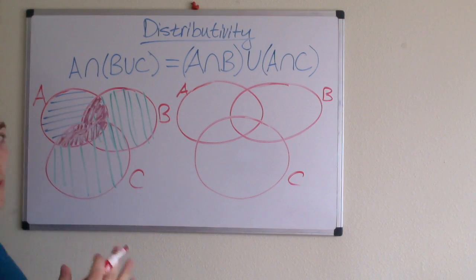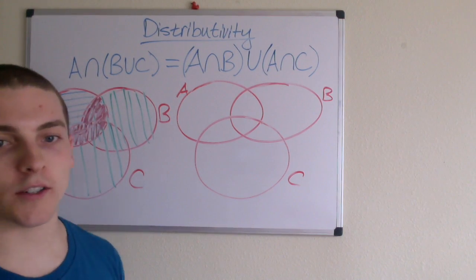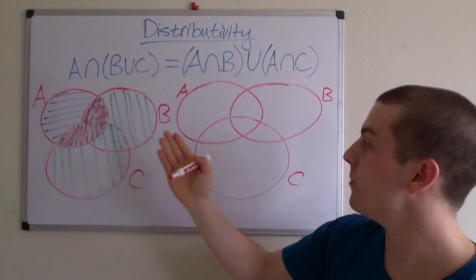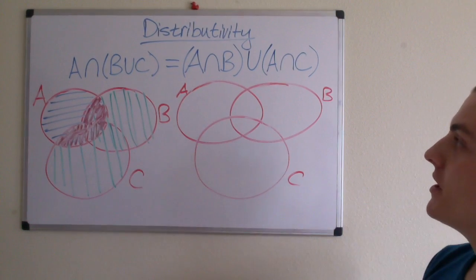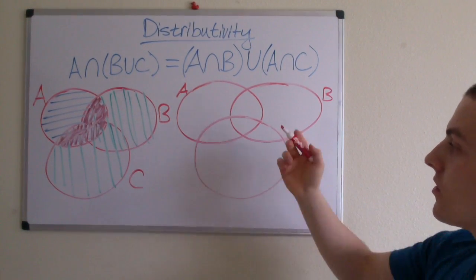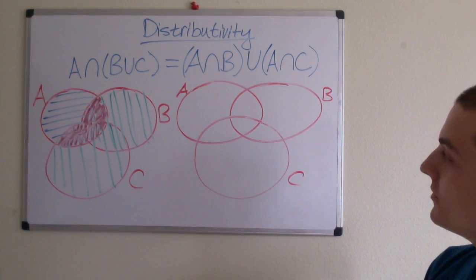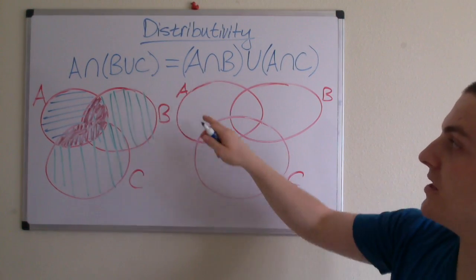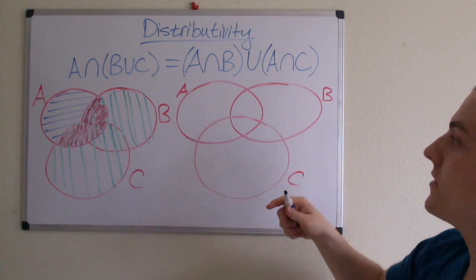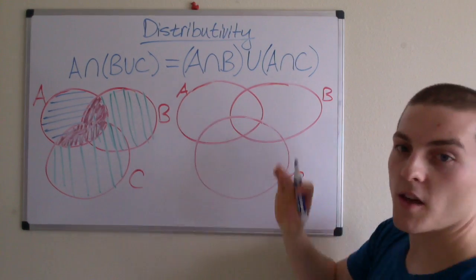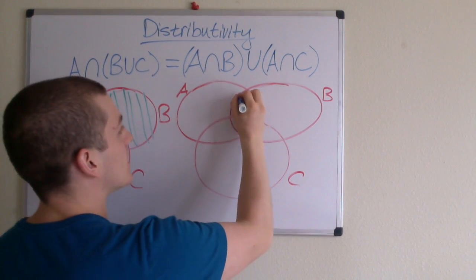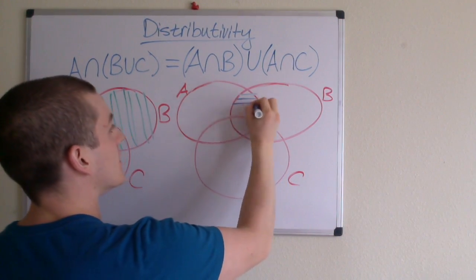So hopefully, for the purposes of equality, this region here will match this region here. Let's get right to it. We have A intersection B — so we have the set A and the set B — meaning that A intersection B is going to be this region here.